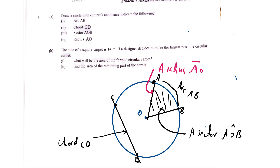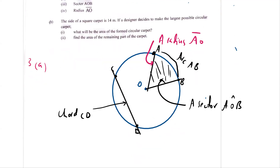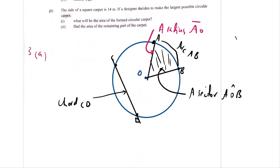That is the solution for 3A. Now going to 3B. The side of a square carpet is 14 metres. We have a square carpet which is 14 metres, and if a designer decided to make the largest possible circular carpet from it, what will be the area of the remaining part of the carpet?